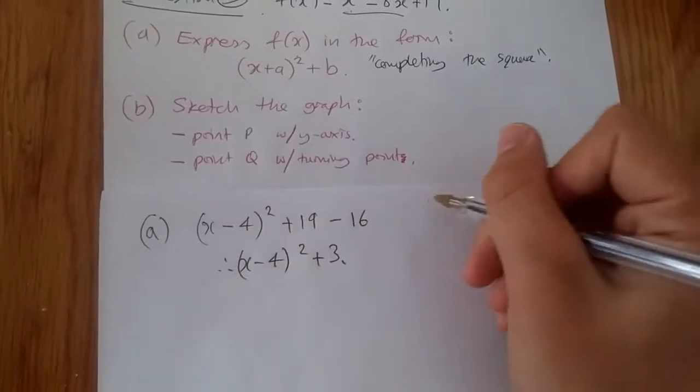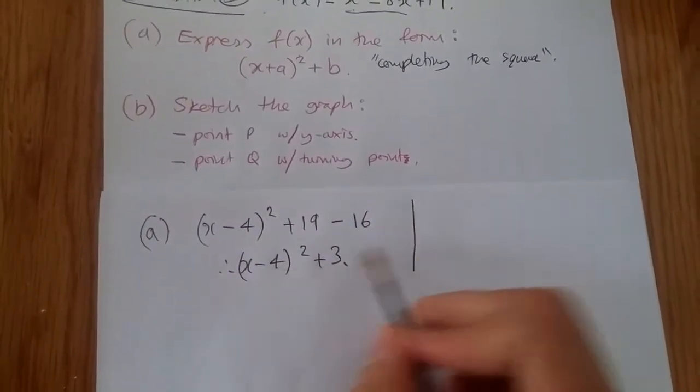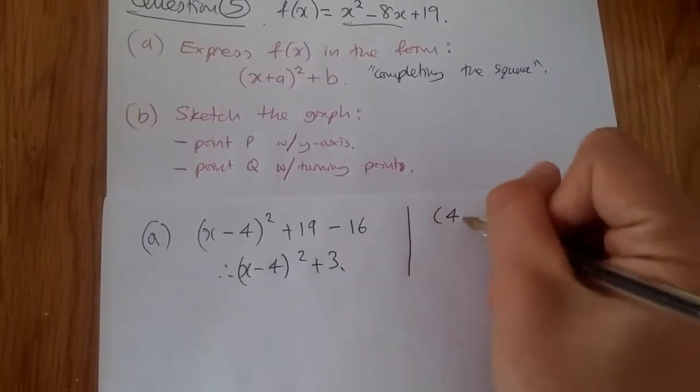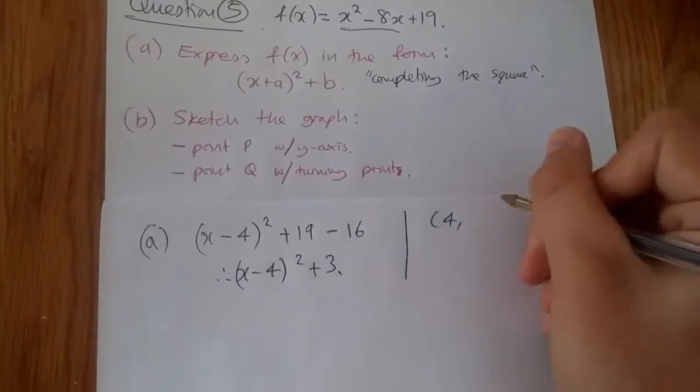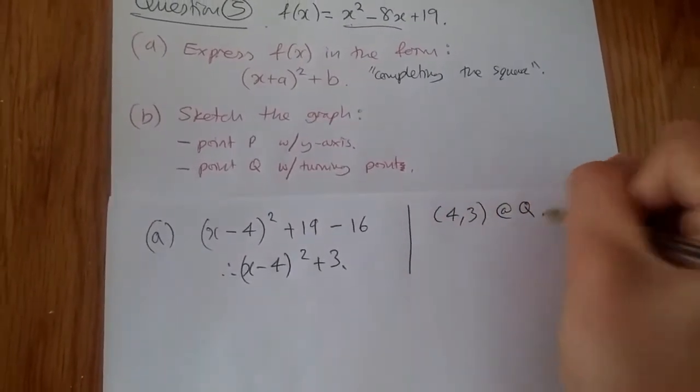From completing the square, we should know that the turning point is always the points here. So the turning point is given by the x-axis. So if it's in a bracket, it will be a positive x. So it'll be 4. And of course, this is plus 3. So it'll just be 3. This will be at point Q.